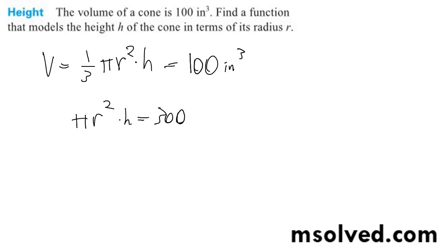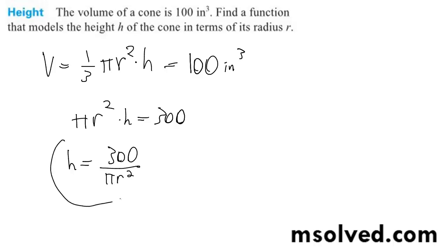And so we divide through by pi r squared, so we get h is equal to 300 divided by pi r squared. And that's how we represent the height in terms of the radius. That's it.